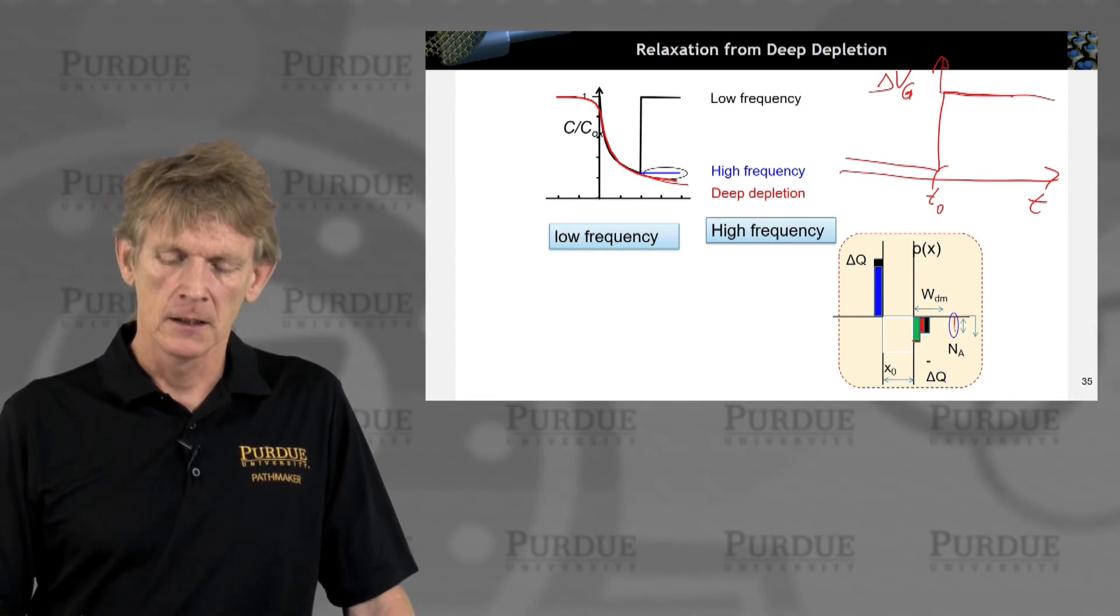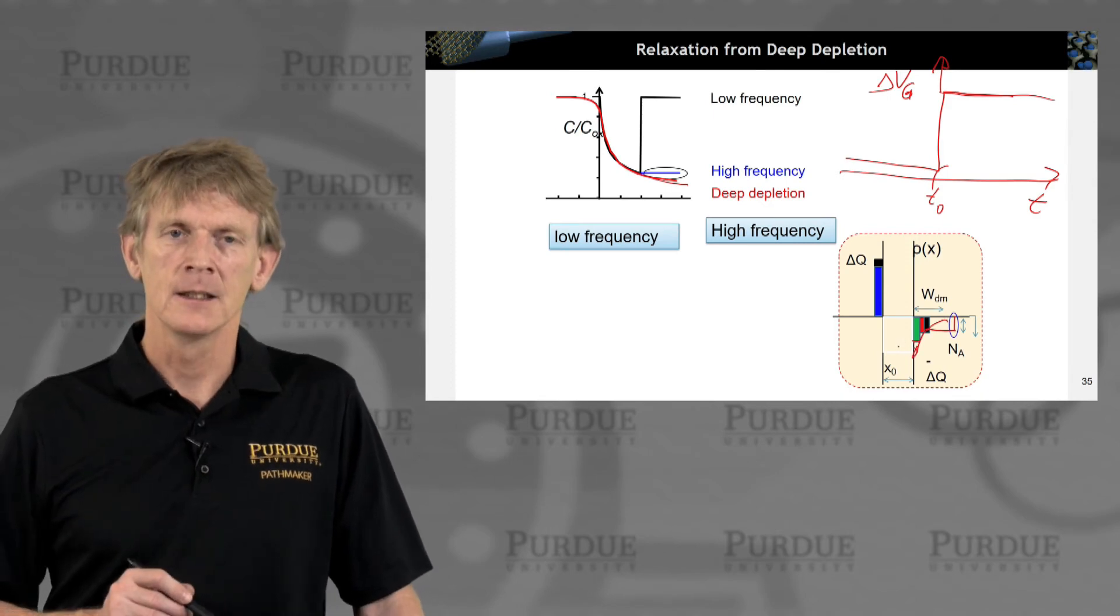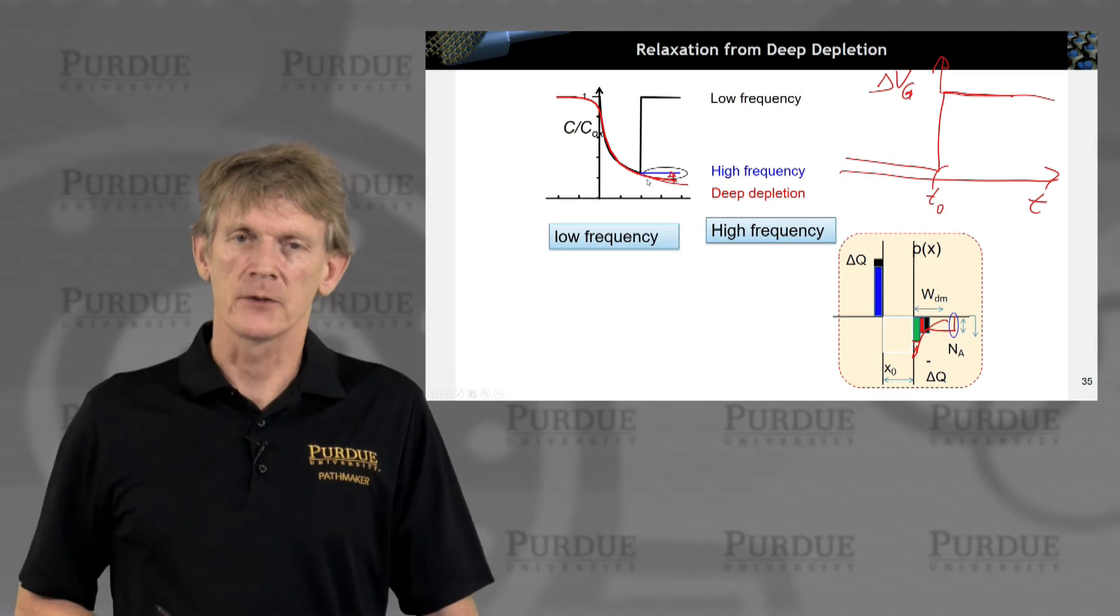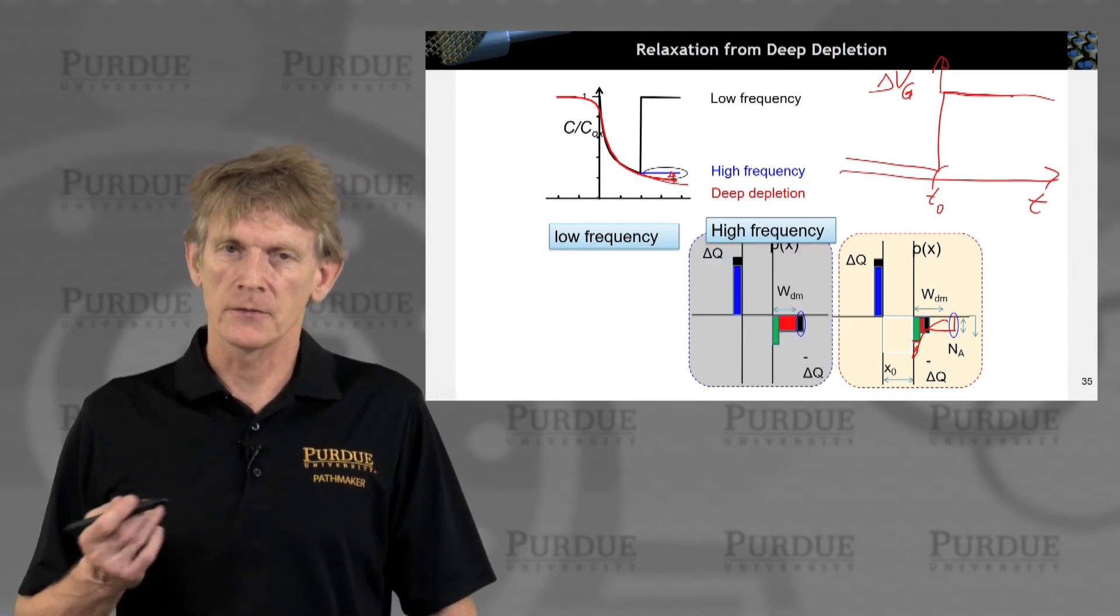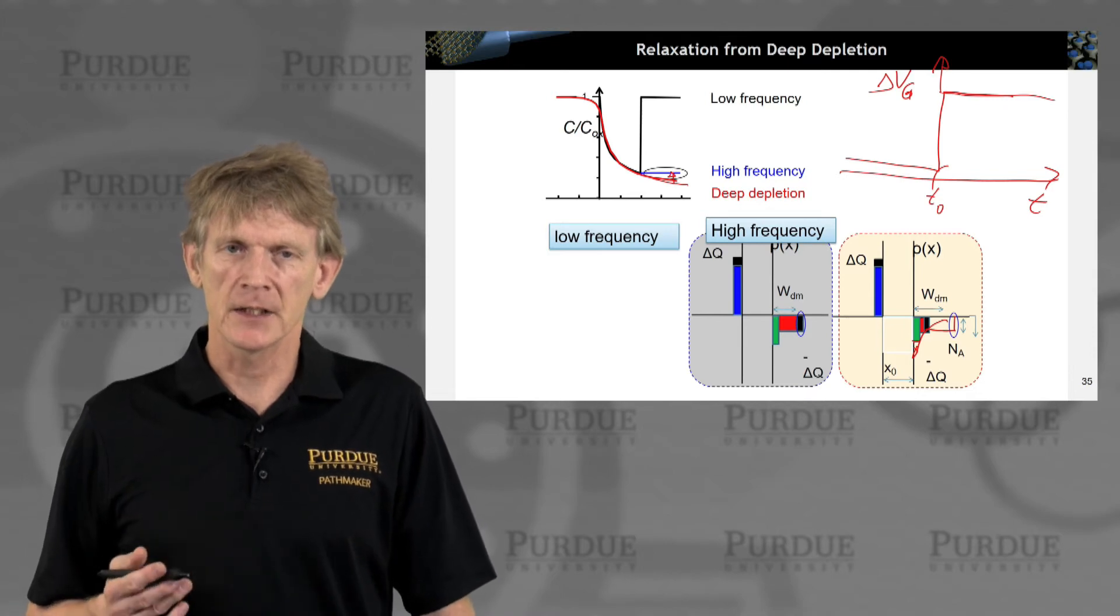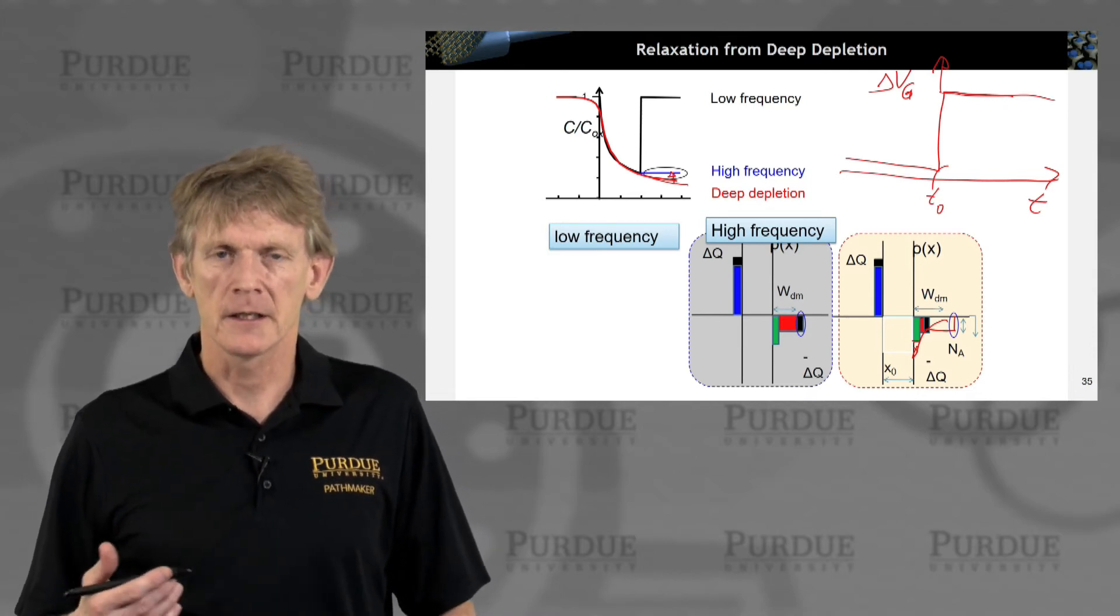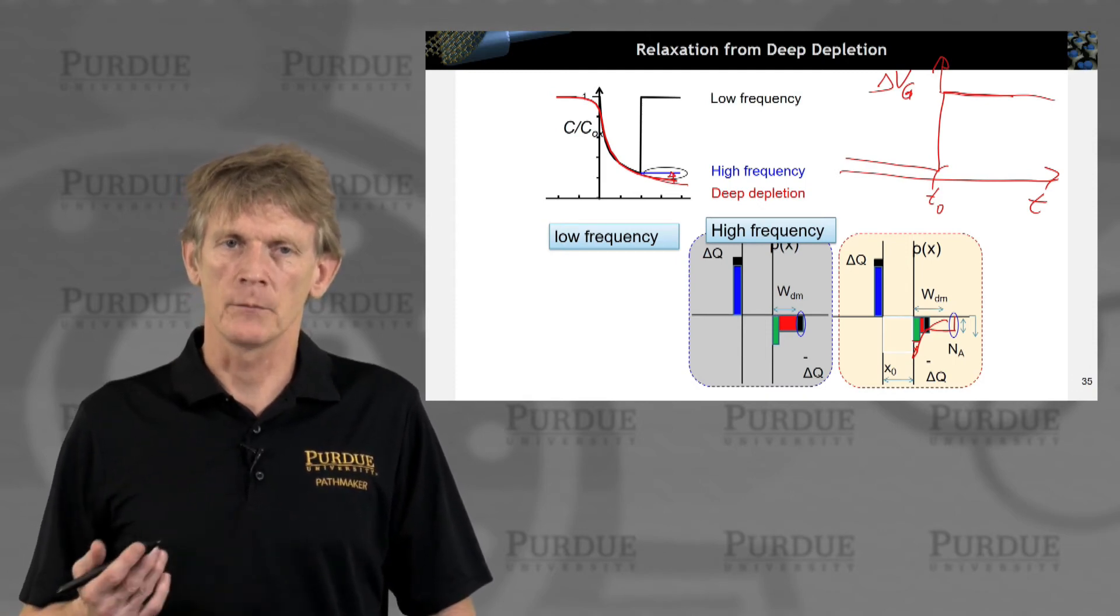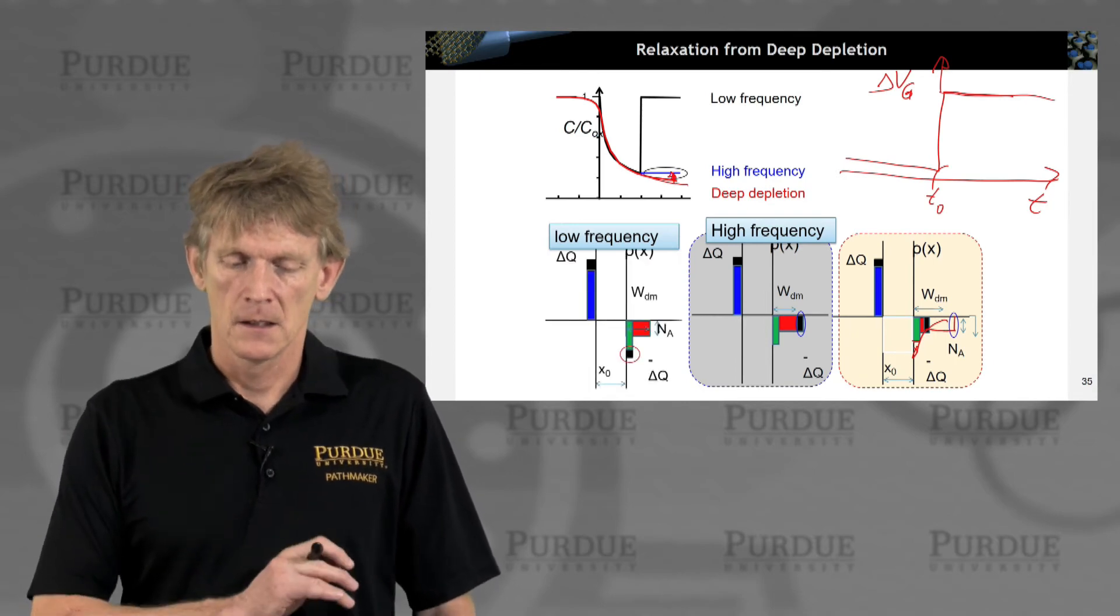And that will be such that all the charge that was sitting here is getting piled up in here, and then the capacitance, again, reduces to its high-frequency value. So that, of course, has to happen in a certain timescale. And again, the timescale of that is that of the carrier generation in your system. That's the minority carrier lifetime in your system.